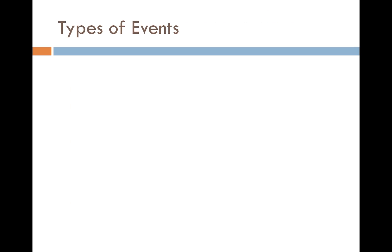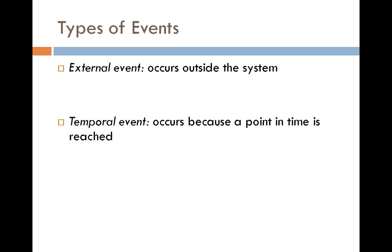So in the Event Table, there's various types of events, and first off, there's external events which occur outside the system. There are also temporal events that occur because a point in time is reached, and state events that occur because something changes within the system. If this doesn't make sense right now, hold tight, and we're going to go ahead and show you some examples of each of these different types of events and how they relate to the Event Table.